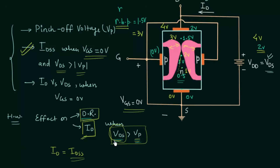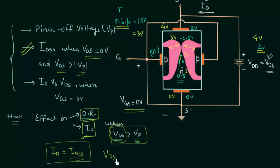If you keep increasing VDS, the current ID will not always remain at IDSS because the N channel will eventually break down. If VDS is increased to a very large value, the N channel cannot withstand the high potential difference between the drain and source terminals and will break down, causing a very large drain current to flow. So ID equals IDSS only when VDS is less than VDS(max), which is the maximum drain-to-source voltage at which breakdown of the N channel occurs.